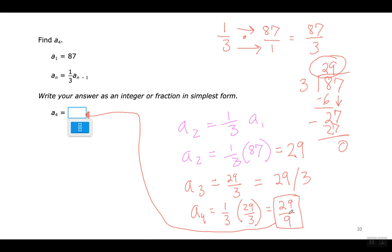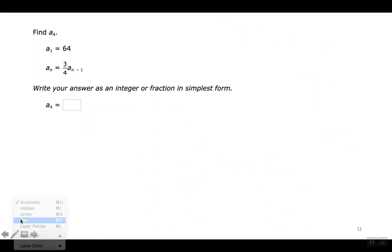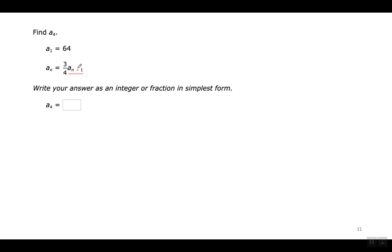You cannot simplify that any further, so that's the answer. This one's a little more complicated, but still with fractions. Remember: A with the N minus 1 means the previous term. Recuerden que A con el N menos 1 se está refiriendo al término anterior. We've got to find the fourth term — tenemos que encontrar el cuarto término.